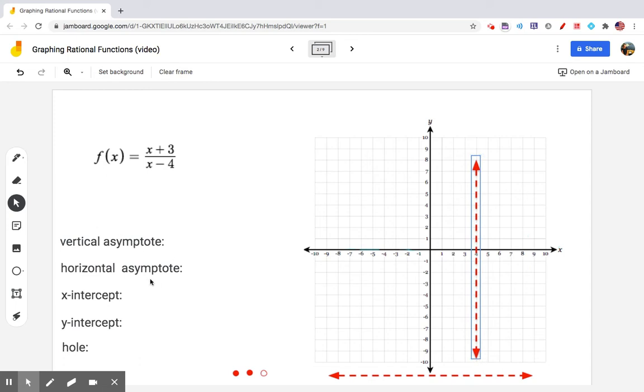Now, regarding horizontal asymptotes, there are three situations. We compare the degree of the numerator and the degree of the denominator. In this case, the degrees match. Whenever the degrees are equal, the horizontal asymptote is found by dividing the leading coefficient of the numerator, which is 1, by the leading coefficient of the denominator, which is also 1. So my horizontal asymptote will be y equals 1.